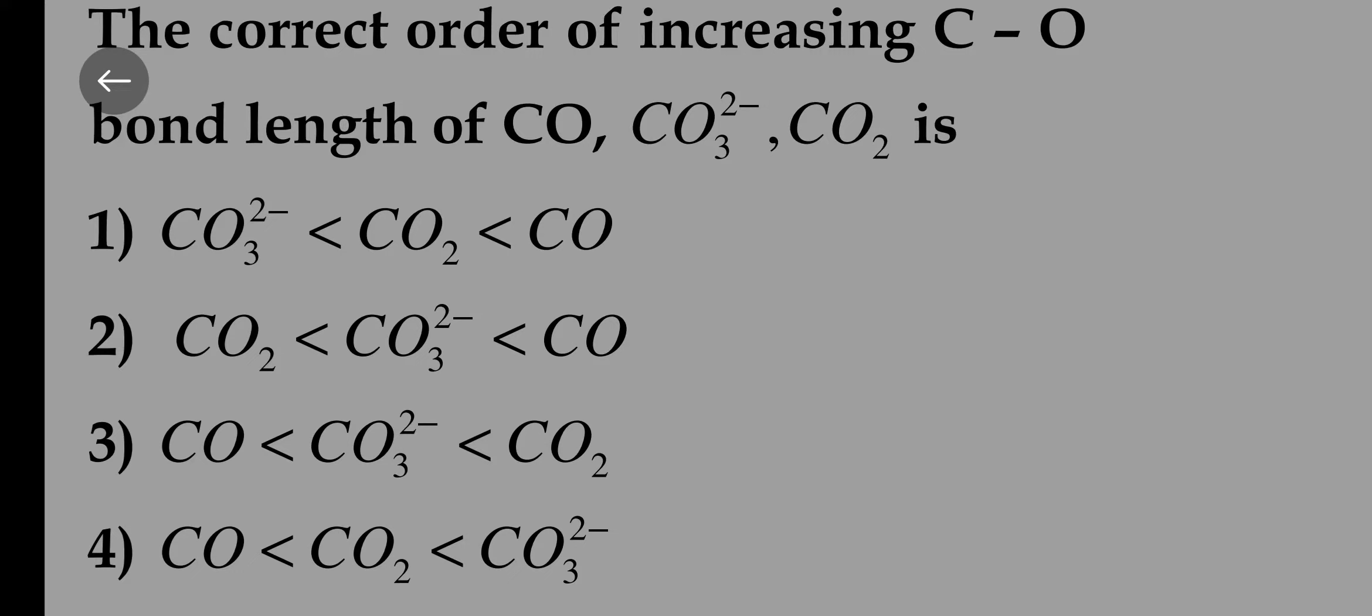The correct order of increasing CO bond length of CO, CO3-2 and CO2 is. CO is carbon monoxide, CO3-2 is carbonate, CO2 is carbon dioxide.